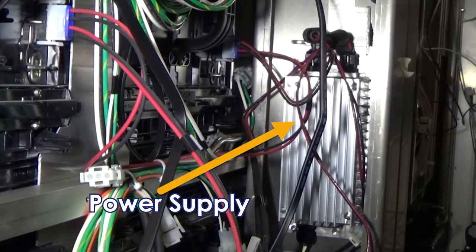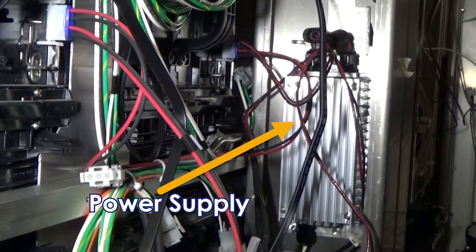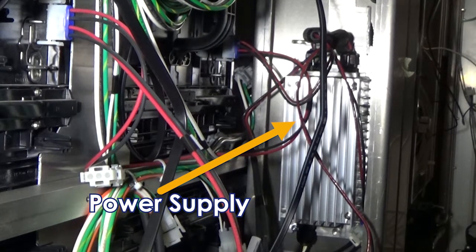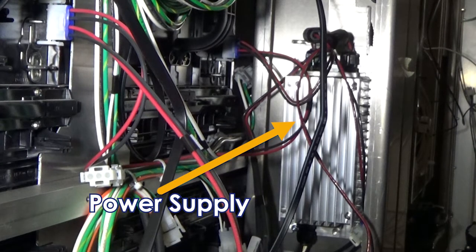The power supply provides power from the power entrance to the module. For BLD series digital billboards, the module power supply is located on the uprights. Each power supply typically controls 12 modules.